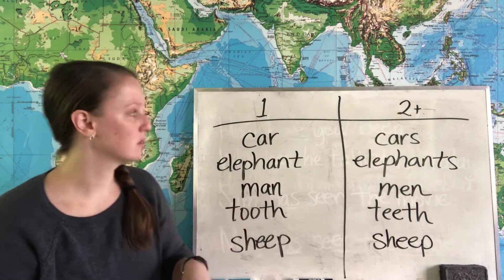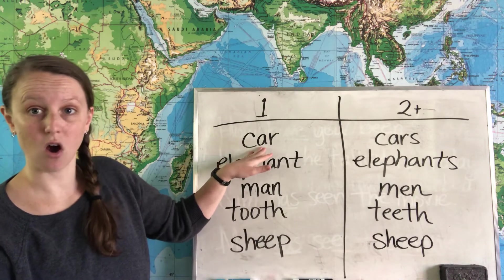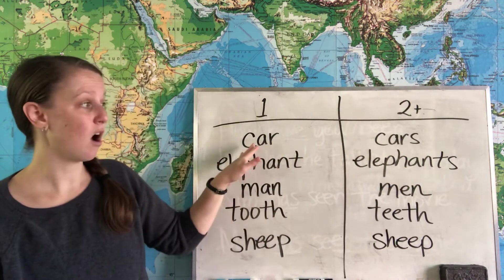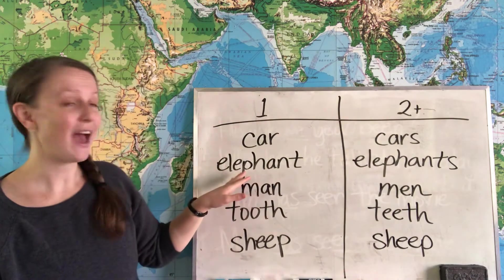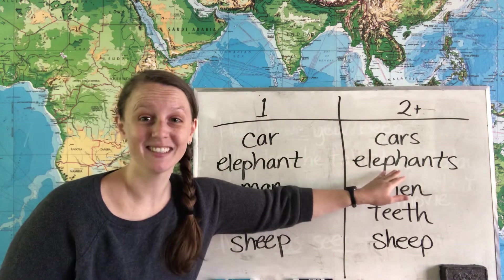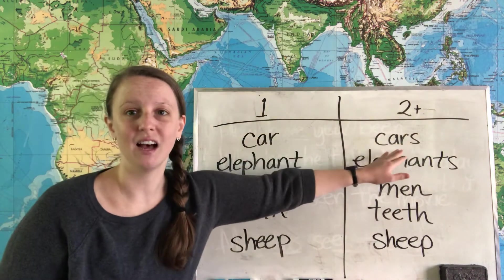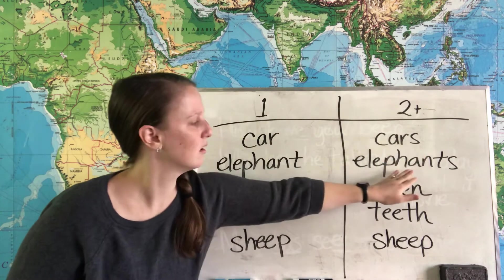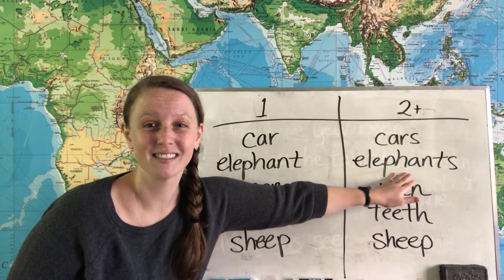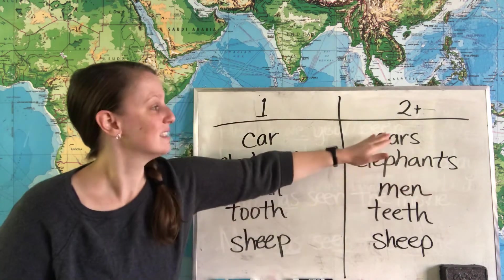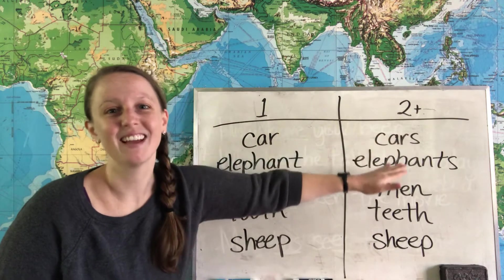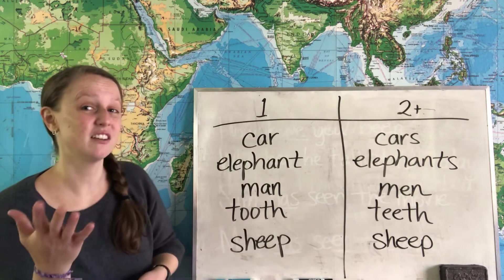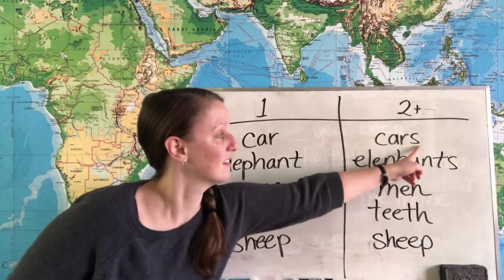For most nouns you can take the noun like 'car' and just add the letter S at the end. One car, two cars. One elephant, two elephants. You'll notice these have a little bit different sound — 'cars' with a Z sound, or 'elephants' with an S sound. Some plurals will have that Z sound and some have that S sound at the end, but most English nouns you can change singular to plural by just adding the letter S.